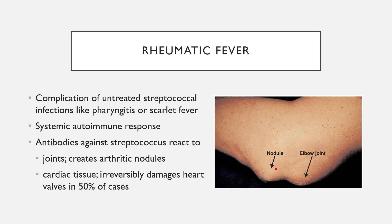Rheumatic fever is the namesake because the joints develop arthritic nodules — similar to rheumatoid arthritis — as visible in images of the elbow joint. Even worse, the antibodies react to cardiac tissue, causing an autoimmune response against the heart that in about 50% of cases irreversibly and permanently damages the heart valves. This can then leave a person susceptible to endocarditis, which as we just saw is more likely in people with damaged heart valves.